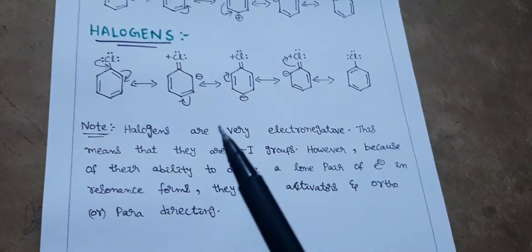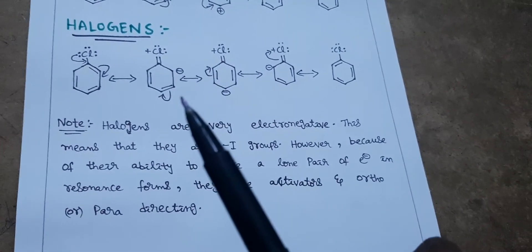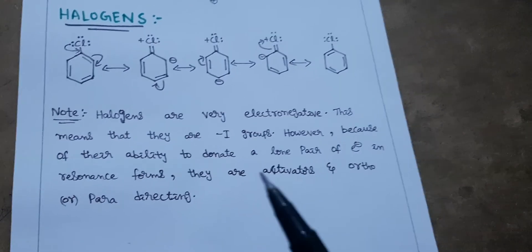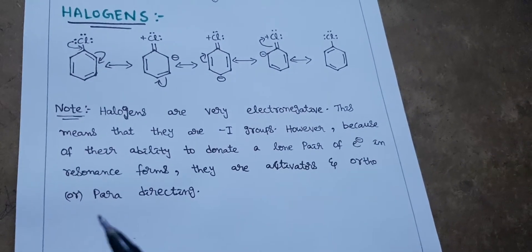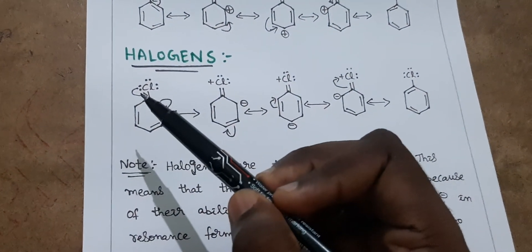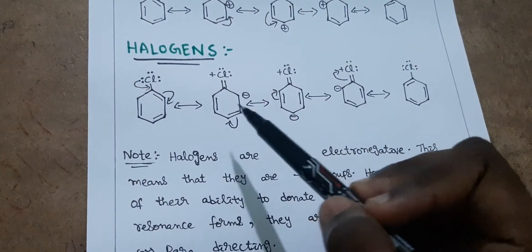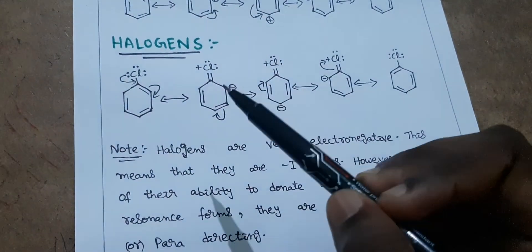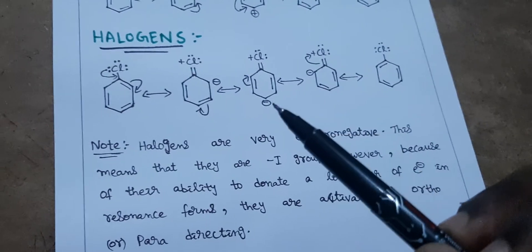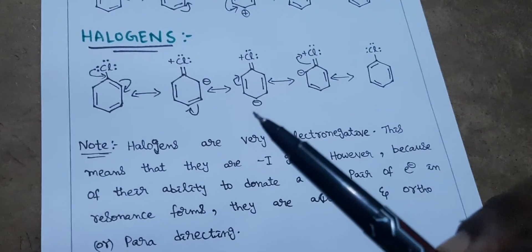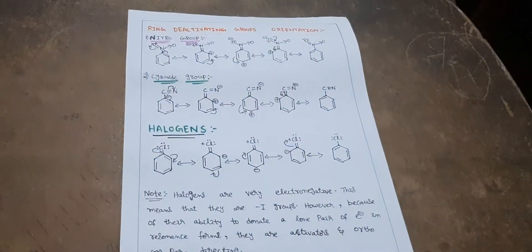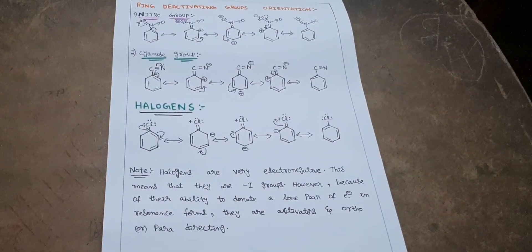That is just a small exception — remember it. If anyone asks you about halogens: they are minus-I groups and highly electronegative, but still, due to their ability to donate a lone pair of electrons in resonance form, they are ring activators and ortho-para directing groups. The resonance forms are similar to ring deactivating groups — bond shifts occur and negative charges appear at ortho and para positions, giving high electron density there. So halogens are ortho-para directing groups. Like, share, and subscribe to channel Sushruta!